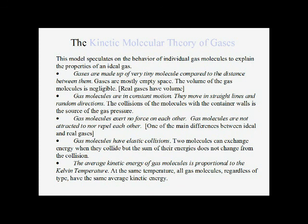Ideal gases are described using the kinetic molecular theory of gases. This theory describes ideal gases perfectly, with a couple of discrepancies for real gases that deviate from the ideal gas law. The theory states that gases are made up of very tiny molecules — treated as point particles with no volume. This simplification works well under normal conditions, but under high pressure where gases are compressed together, the actual volume of gas molecules becomes significant and causes deviations from the ideal gas law.